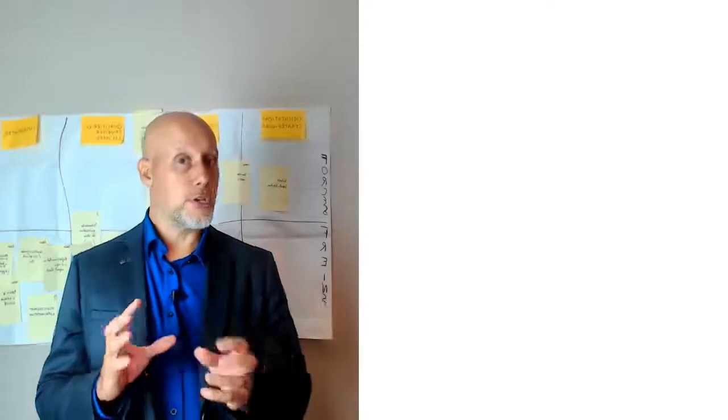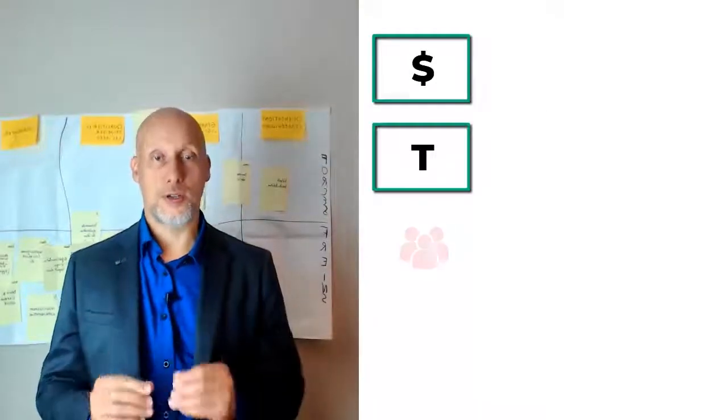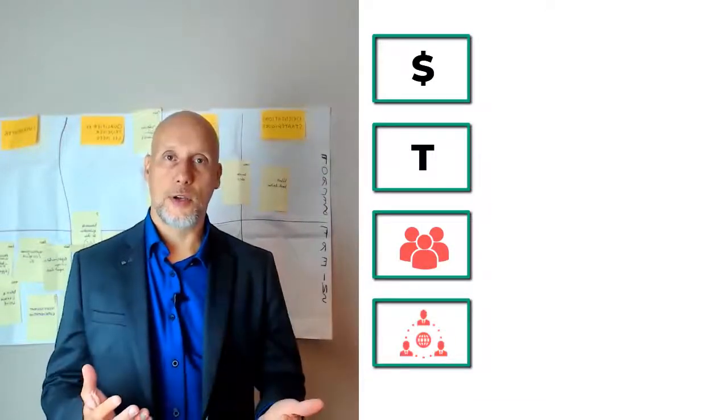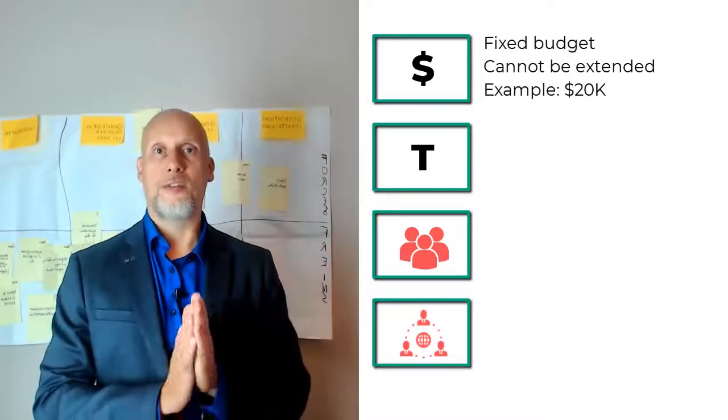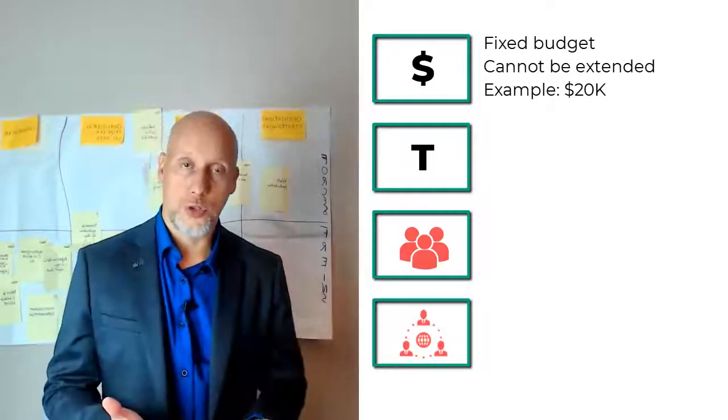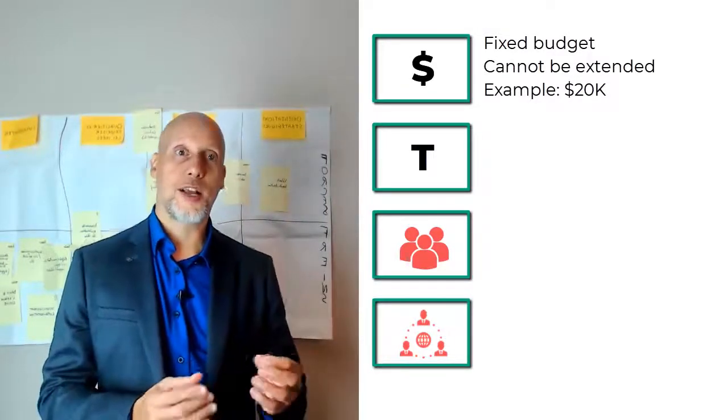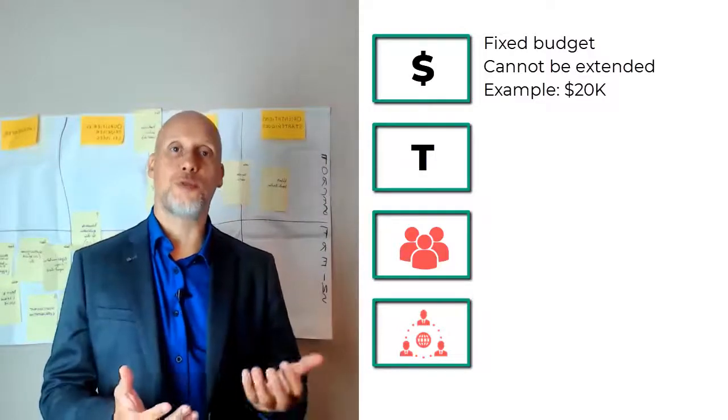We have the budget box, the time box, the team box, and the location box. The budget box is as the name implies. When we start an experiment, we have a fixed amount of money, of resources to do it. There will not be one more dollar. If we cannot do it within this budget, then we just don't do it at all. We have to split it into smaller experiments.